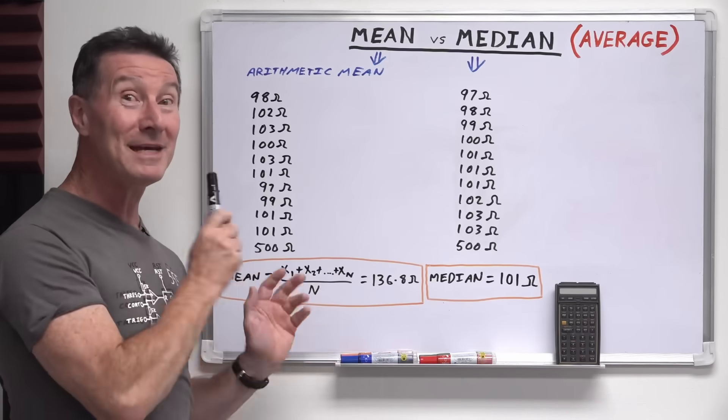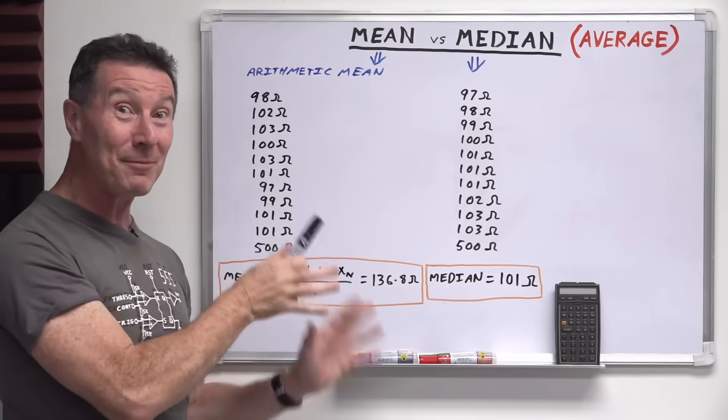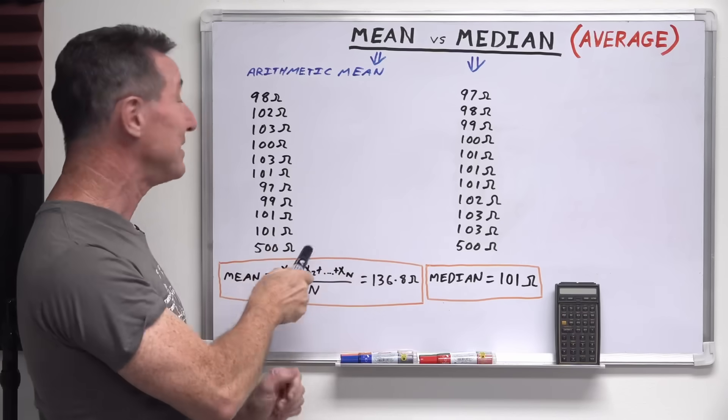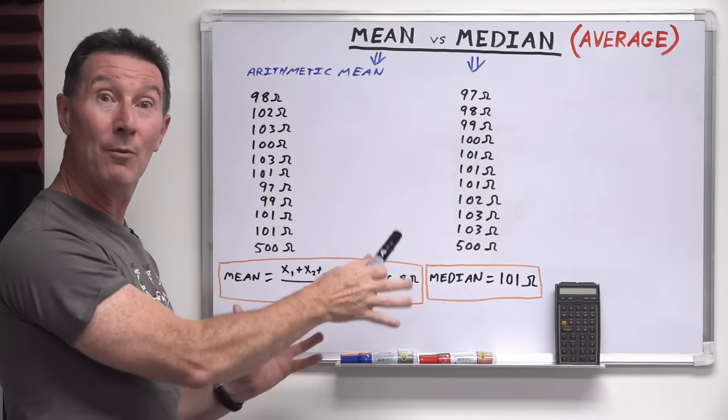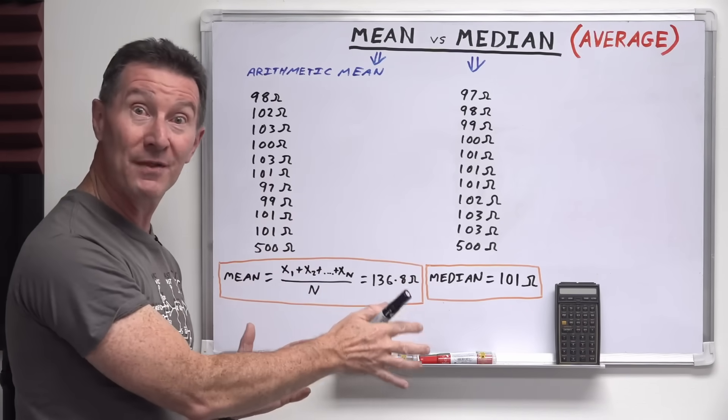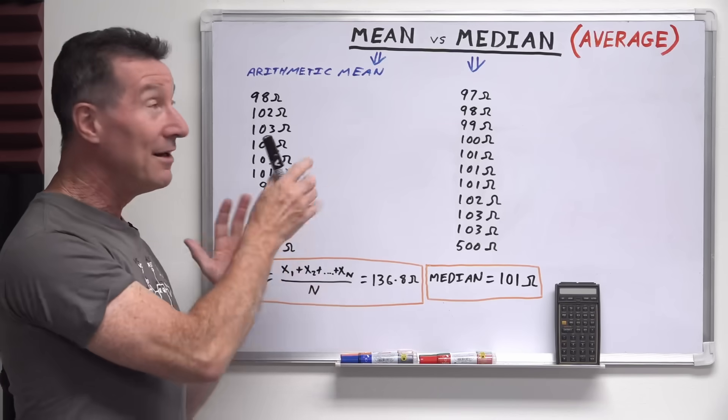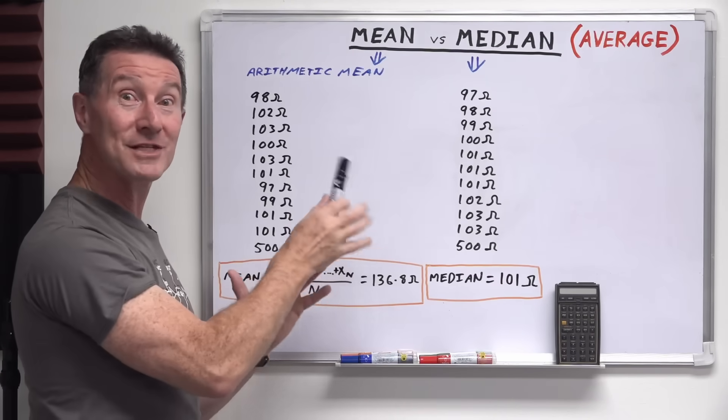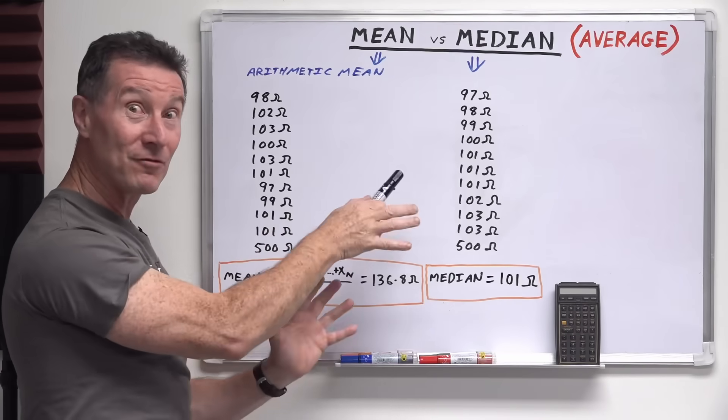But there are many cases where using the mean or the average value is going to give you a skewed result, potentially deliberately skewed result. As I said, people can use these terminologies to manipulate data for nefarious means to try and persuade you one way or the other.